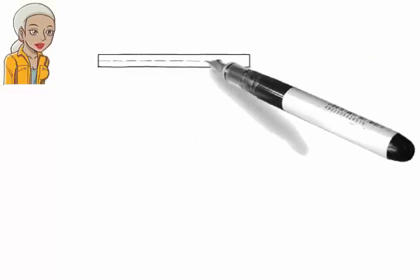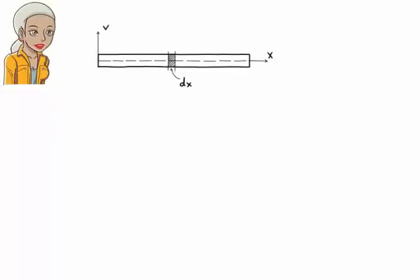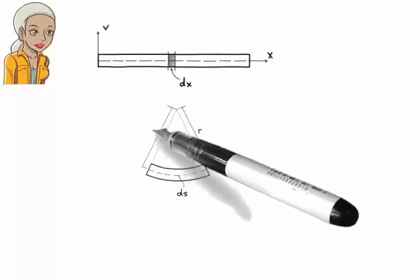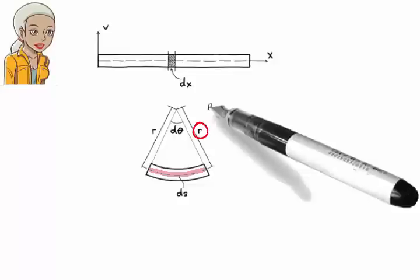Consider a very thin slice of the beam. The width of the slice is denoted by dx. When the beam bends, this slice deforms like this. Let's refer to the arc length along the neutral axis of the slice as ds. This arc length can be assumed to be that of a circle having a radius of r. We refer to r as the radius of curvature.